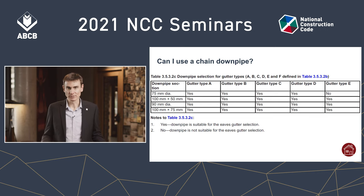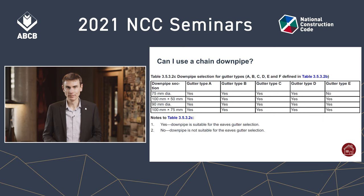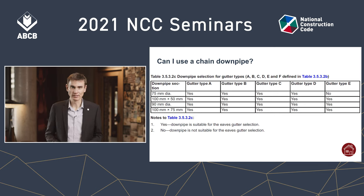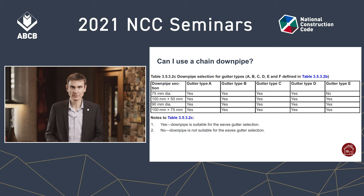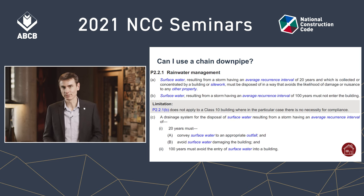Finally you get to Table C, which gives you the downpipes that you can use. As you can see, chains aren't provided as an option — you've got only the conventional types listed in the column on the left. So you can't have a chain downpipe unless you do a performance solution.